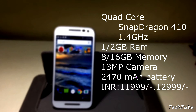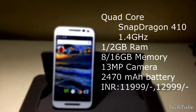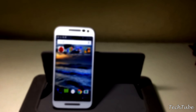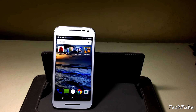The Moto G3 also has the Snapdragon 410 quad-core CPU but clocked at 1.4GHz. It comes with either 1GB of RAM and 8GB of built-in memory, or 2GB of RAM and 16GB of built-in memory depending on the model you choose, and a 13-megapixel rear camera.